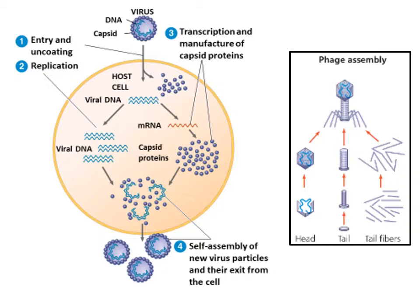Here's a general schematic of that process. The picture shows the virus entering into the cell. With replication, viral DNA is being replicated and used to make viral mRNA, which is used to make viral proteins. The viral DNA is replicated to make more viral DNA, then it all gets packaged together, and the new viral particles exit the cell.